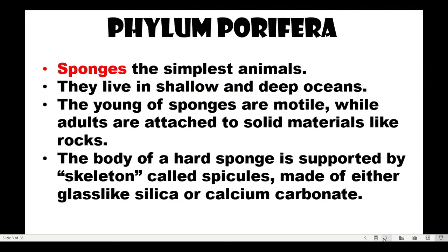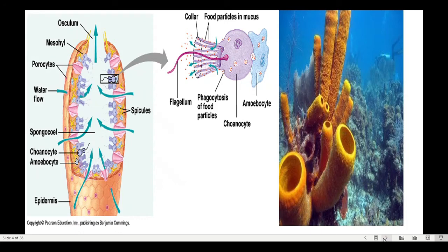Phylum Porifera — this is where SpongeBob belongs. Sponges are the simplest animals under Kingdom Animalia invertebrates. Sponges live in shallow and deep oceans. The young of sponges are motile, meaning they move when young, while adults are attached to solid materials like rocks. The body of hard sponges is supported by a skeleton called spicules, made of either glass silica or calcium carbonate.